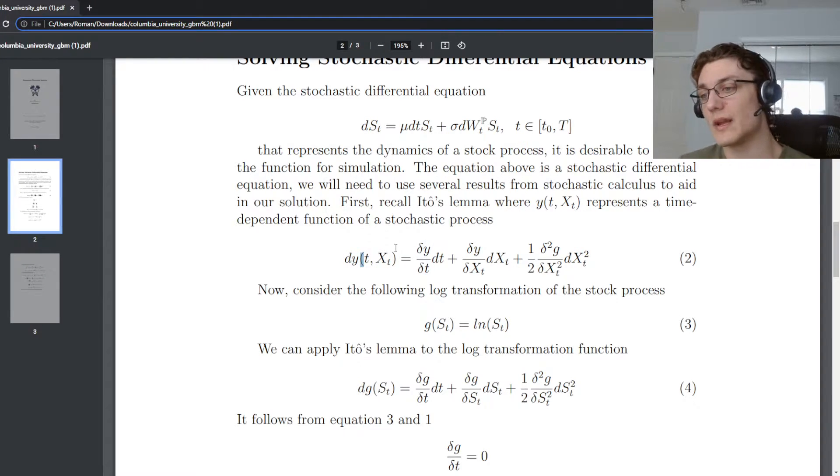Then we can represent the change as the partial with respect to time multiplied by the time differential plus the partial with respect to the process times the process differential plus one half. This whole term is the second order derivative with respect to the process times the differential of the process squared. This should look very similar to a Taylor series expansion. That's because it is. But the higher order dt terms, that is anything dt squared and higher, converge to zero as a result from stochastic calculus.